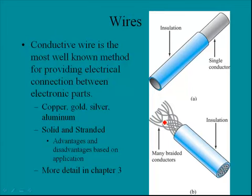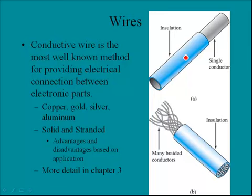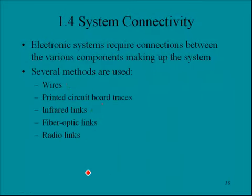The wire is usually solid or stranded. Here we have a picture of a solid strand — a single conductor made of solid metal wrapped with insulation. The lower wire is similar but uses many braided conductors rather than a single core. There are advantages and disadvantages of each based on the application. In Chapter 3, we'll provide much more detail about the specifics of wire. For now, we're just mentioning it as one of the methods for system connectivity.